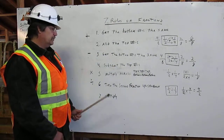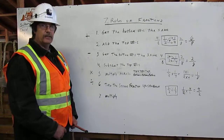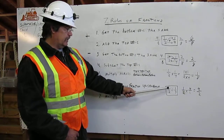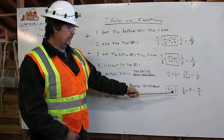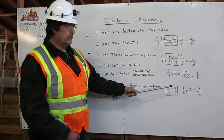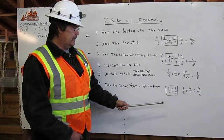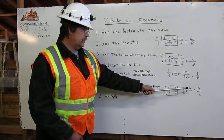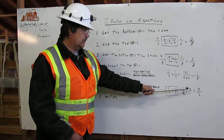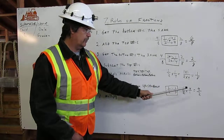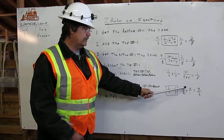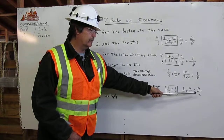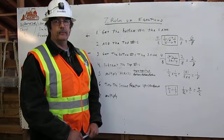For division, you turn the second fraction upside down, and then you multiply. In my example, one-half divided by one-fourth — again you're going to change it, so you draw a box around it. Then bring the one-half over and flip the second fraction upside down, so you get four over one. You multiply one times four to come up with four, two times one to come up with two, and you end up with four halves.